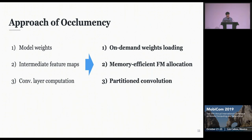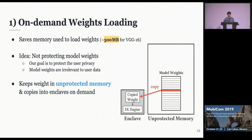We devised three different techniques to effectively reduce the memory usages. The first one is on-demand weight loading. On-demand weight loading saves the memory used to load model weights inside the enclaves. Our idea here is not protecting the model weights, because our goal is protecting the user's privacy and the model weights are not relevant to user data. Our system keeps the weights inside unprotected memory and copies only parts of it into the enclaves on-demand.